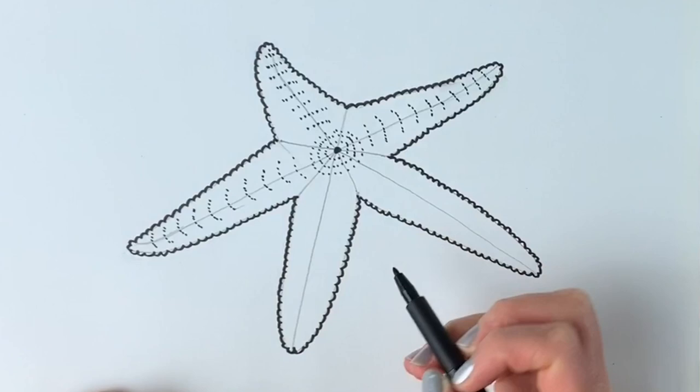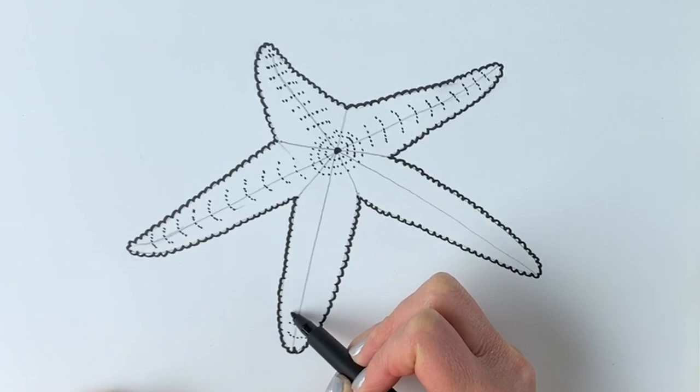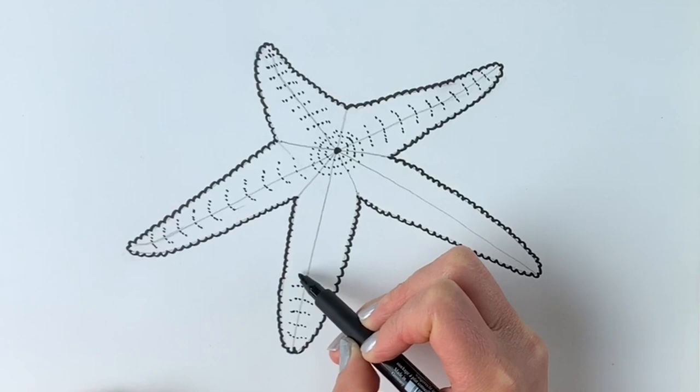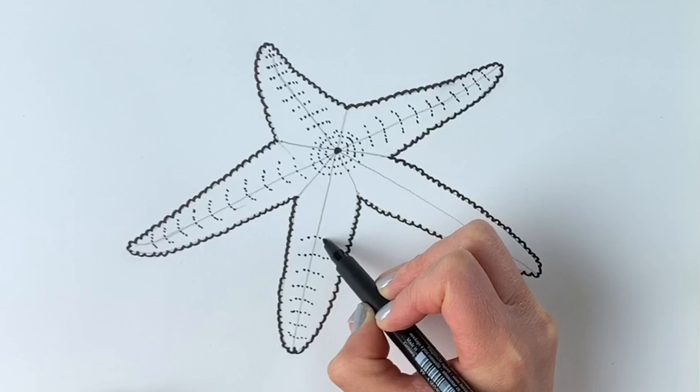And then just notice that the spaces in between these get slightly larger the closer we get to the center. And we're going to do the same here. Now notice that these ones are curving in the opposite direction. There we go.